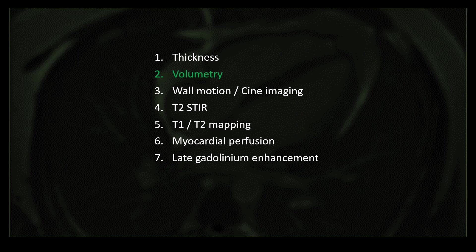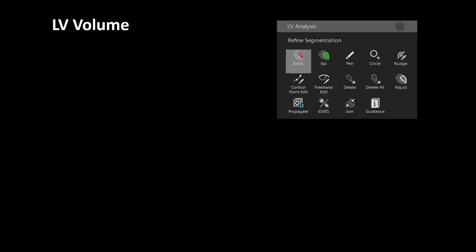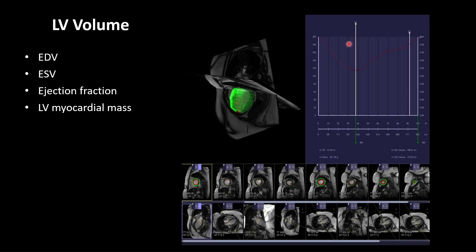Now coming to volumetrics. We need to draw ROIs — regions of interest — over the endocardial and epicardial surface of the LV wall. The papillary muscles should be excluded to avoid overestimation of LV mass. You draw ROIs on each segment, and if you are using SINGO, these are the tools used to draw the ROIs. You then get a graph giving you end-diastolic volume, end-systolic volume, ejection fraction, and myocardial mass.